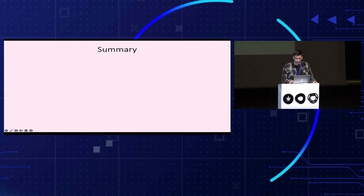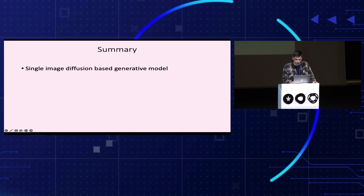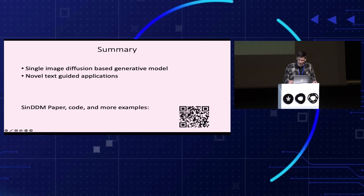To conclude, we presented a single image diffusion-based generative model which opens the door to external guidance-based applications in the single image domain. In particular, we demonstrated text guidance with a pre-trained CLIP model, allowing us to generate new content, new styles, and scene configurations at arbitrary image aspect ratios guided by text, which is currently not possible with externally trained models. You can find our paper, code, and more examples on the project's website.